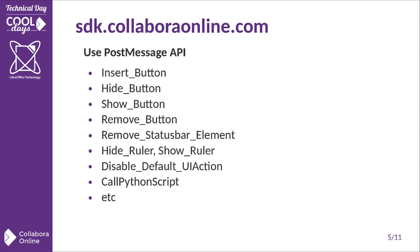But this is just scratching the surface. We have a lot of other options you can use via the post message API — inserting new buttons, hiding existing buttons, showing different buttons, removing buttons and elements. Of particular note is the disable default UI action, which allows you to prevent the default behavior of a particular UI element so that only the post message is sent, and your app can then handle it as you please.